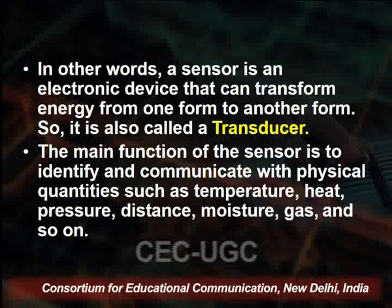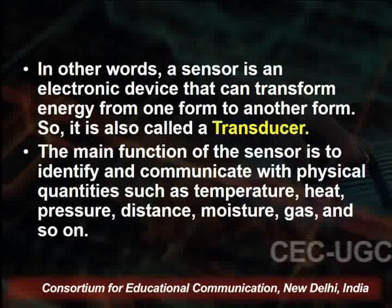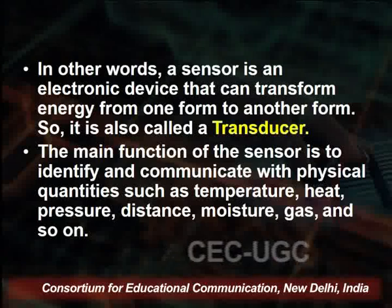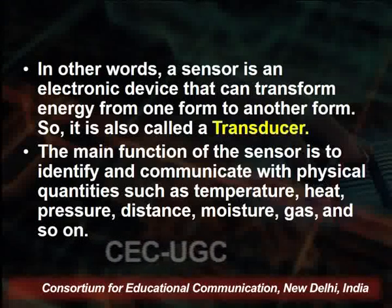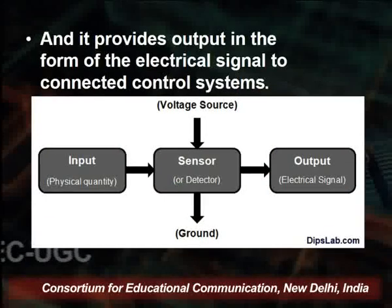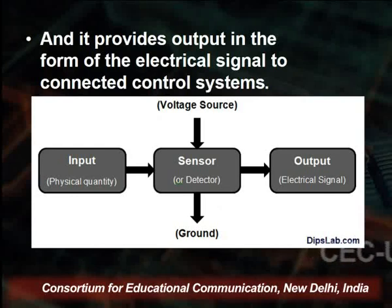The main function of a sensor is to identify and communicate physical quantities such as temperature, heat, pressure, distance, moisture, gas, and so on. For example, if we are monitoring the temperature of a system, the sensor detects it at various points and communicates those quantities to the control system. It provides output in the form of an electrical signal to the connected control system. Sensors detect physical activity, transfer this parameter to the control system, and the control system produces the output.